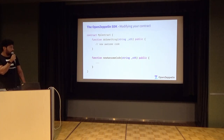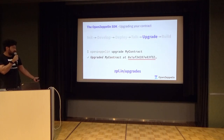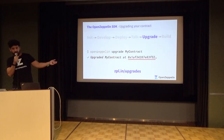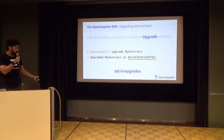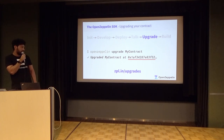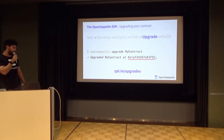You just modify your broken function, add new awesome code, and run OpenZeppelin upgrade specifying your contract — and that's all. The CLI will upgrade your contract, and as you can see, it is deployed at exactly the same address as it was created the first time.